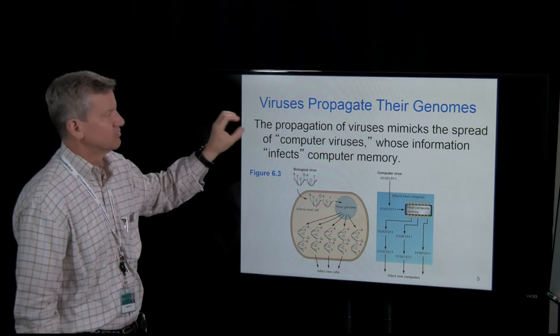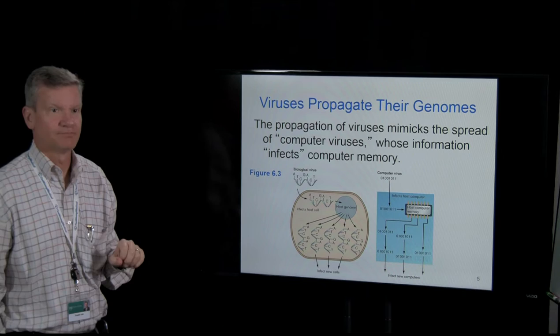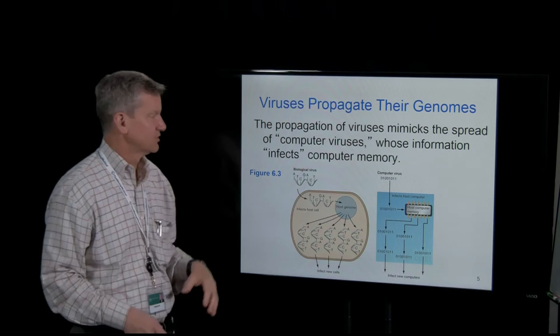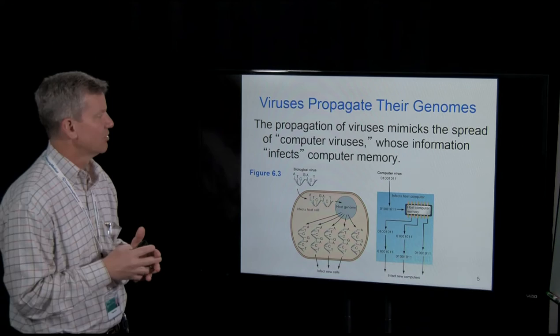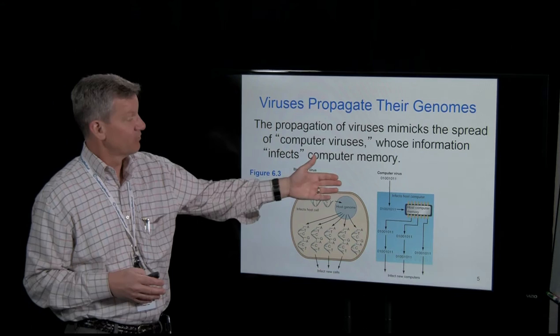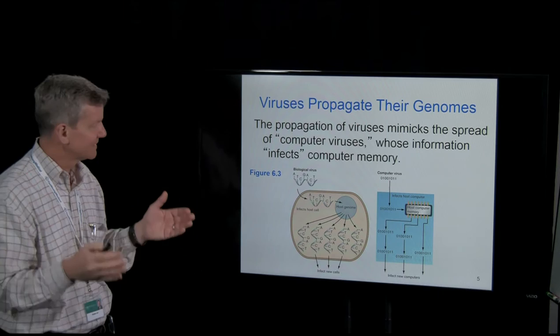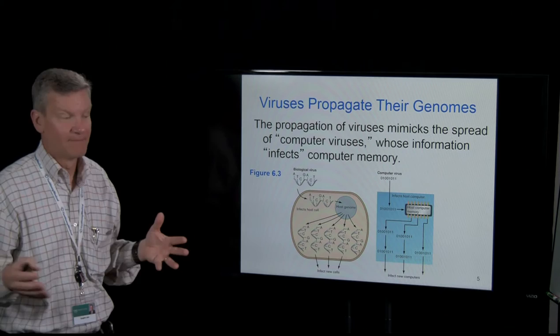Viruses propagate their genomes — that's the job of a virus, to propagate its genome. Natural biological viruses came along long before computer viruses, but computer viruses are a nice way to illustrate what's going on. In the case of a computer virus, it comes in and infects a computer, you send out emails, and it infects other computers — the computer virus just makes more of itself. That's exactly what a biological virus does.